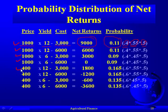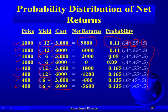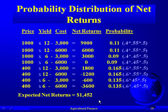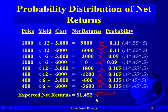There are two prices — $1,000 and $400 — two yields — 12 or 6 metric tons — and cost alternating between $3,000 and $6,000. We have the probabilities for each state of nature, and doing the multiplication gives us a discrete probability distribution of outcomes ranging from a high of $9,000 net return at 11% probability to a low of negative $3,600 at a 13.5% chance. To calculate expected returns, we multiply each return by its probability and sum them up, giving an expected return of $1,452.